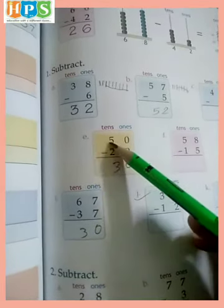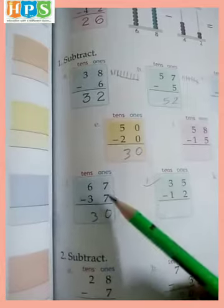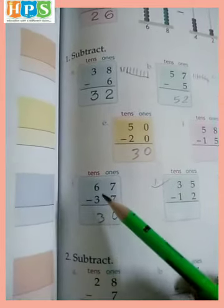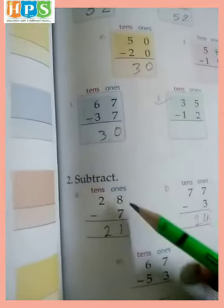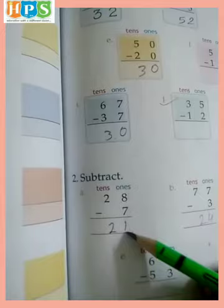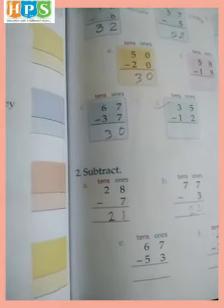5 minus 2 equals 3. 7 minus 7 equals 0. 6 minus 3 equals 3. 8 minus 7 equals 1. And we write 2 as it is. Come to the next page.